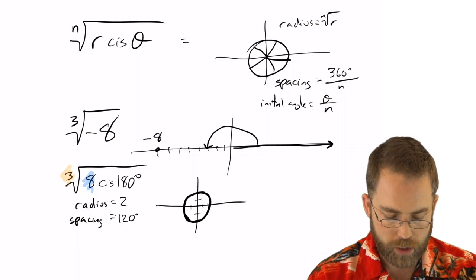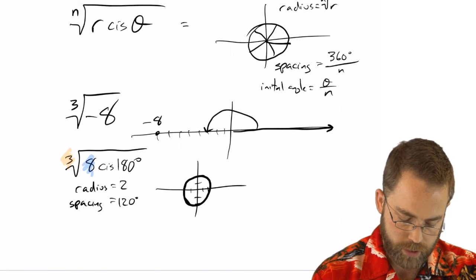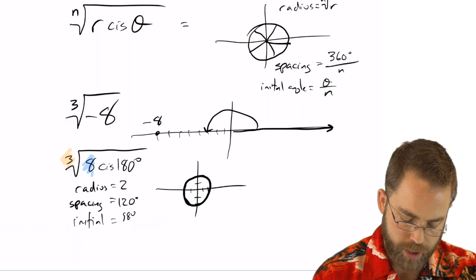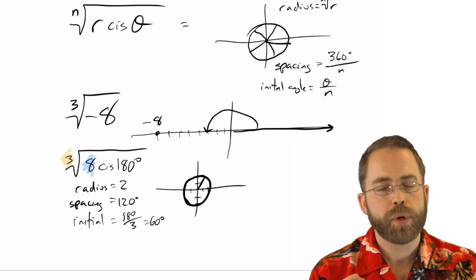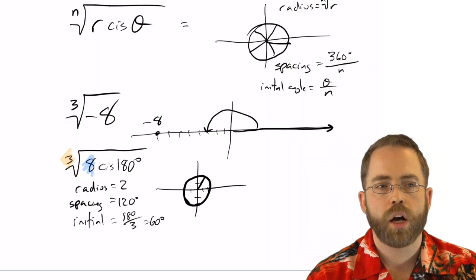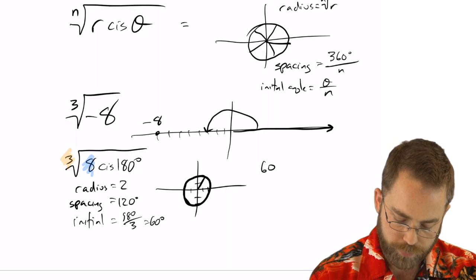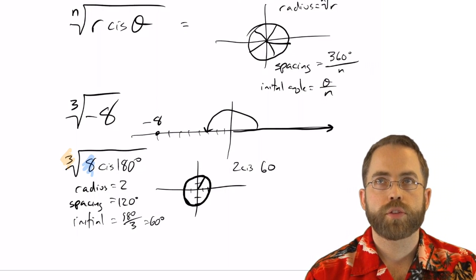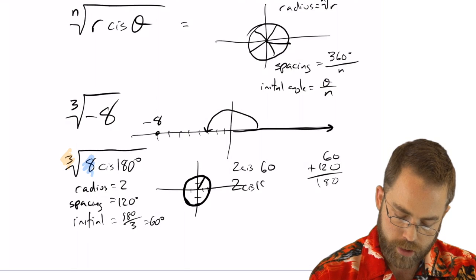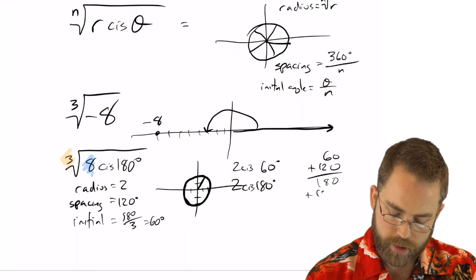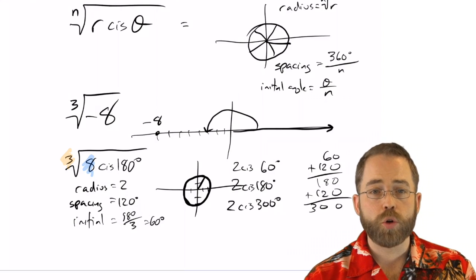But the initial angle is going to be something different in this case. The initial angle is 180 divided by three, which is 60. So we need to start off at a 60 degree angle and then we need to be evenly spread out every 120 degrees. So 60 and then 120 later than that. So the first one is two cis 60, 60 plus 120 is 180. So two cis 180. And then 120 added to that is 300, two cis 300.